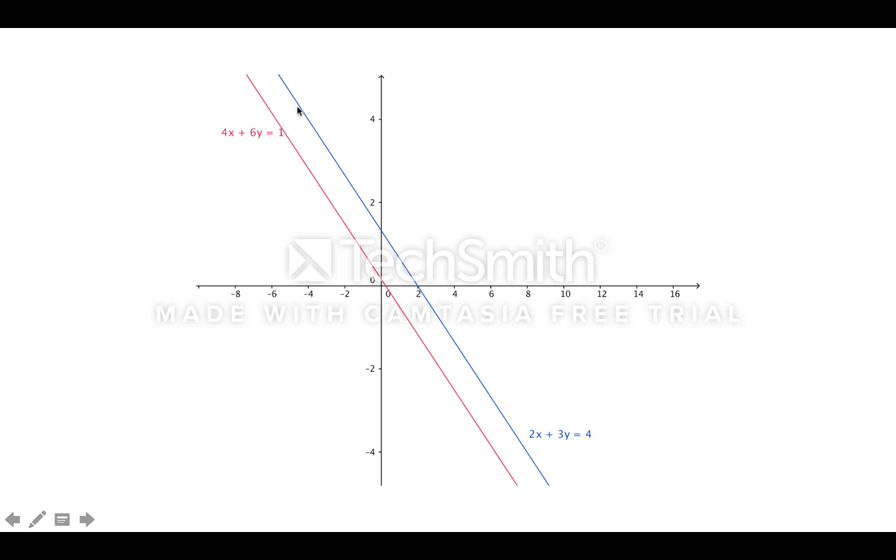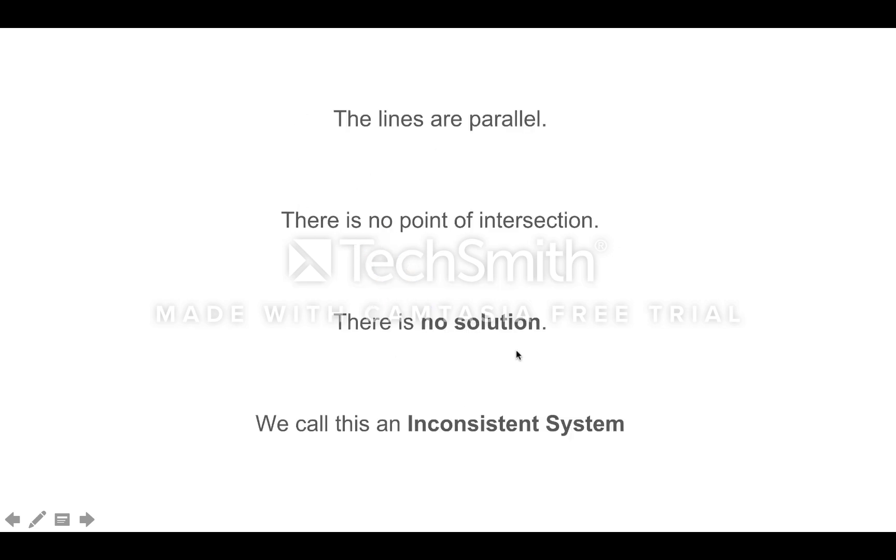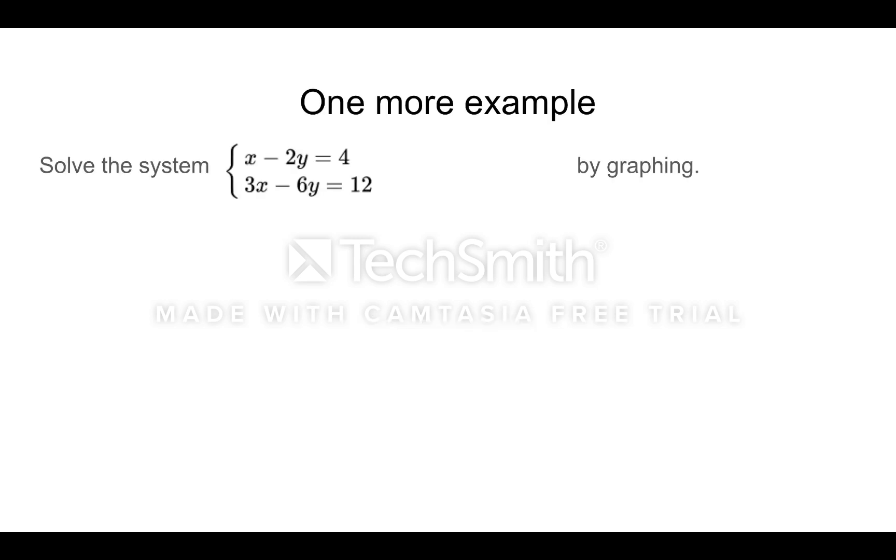Remember, we're looking for the point of intersection. There is none, so there's no solution. This system of equations has no solution. We call this an inconsistent system.